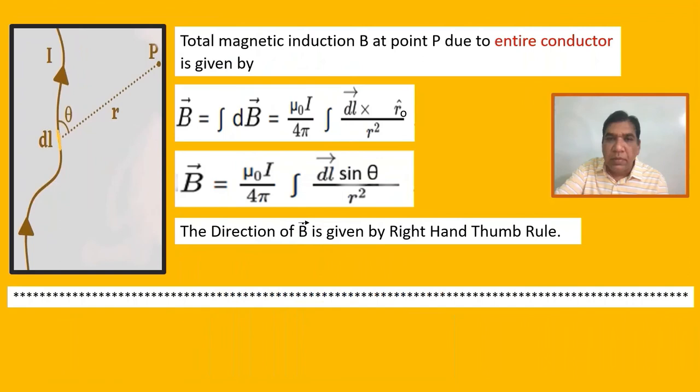To find the total magnetic induction B at point P due to the entire conductor, we use vector B equals the integral of vector dB, which equals μ₀ I over 4π times the integral of vector dl cross vector r₀ over R squared. The final equation is vector B equals μ₀ I over 4π times the integral of dl sin θ over R squared.